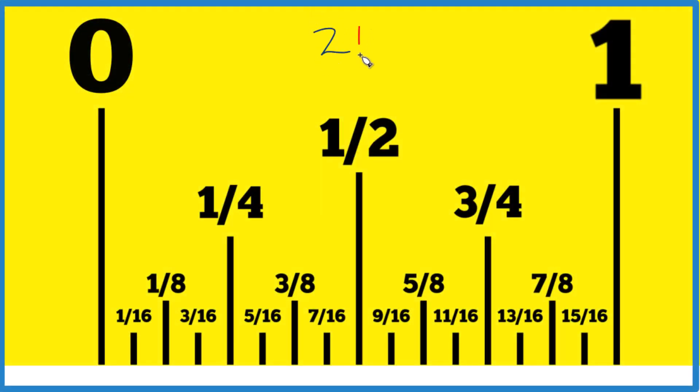So let's find 21/32nds of an inch on our ruler or tape measure here. The way to think about it is, if you have 1 inch, 0 to 1, this is our 1 inch.